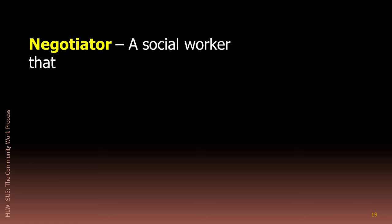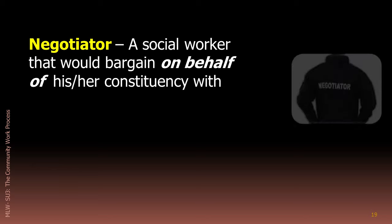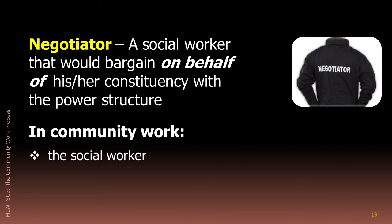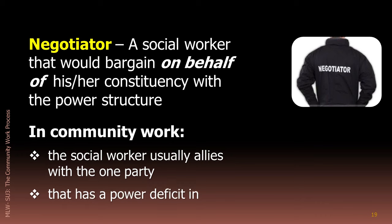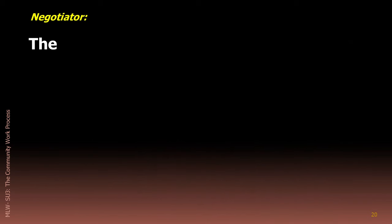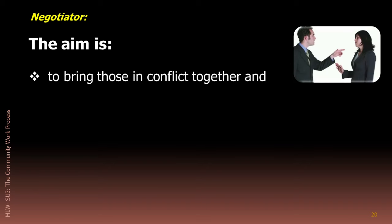We now move over to the role of negotiator. As a negotiator, the social worker would bargain on behalf of his or her constituency with the power structure. In community work, the social worker usually allies with the one party that has a power deficit in the relationship. The aim is to bring those in conflict together and to seek a compromise on which both parties could agree.